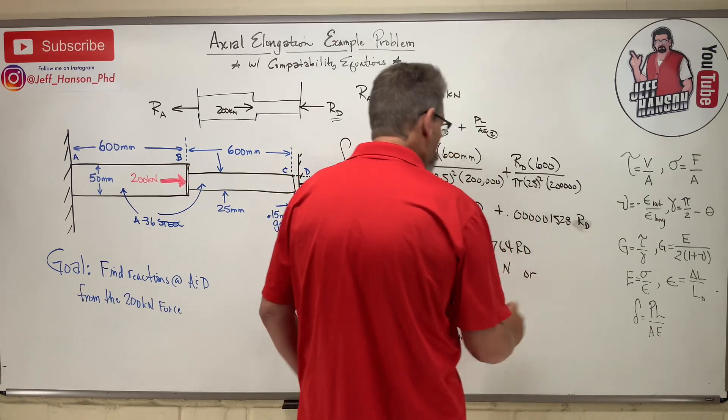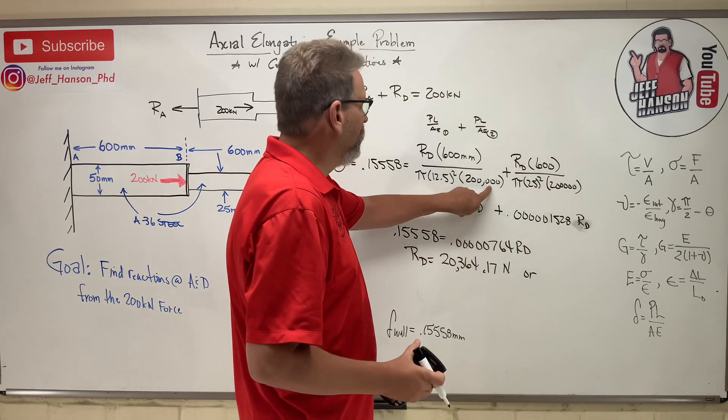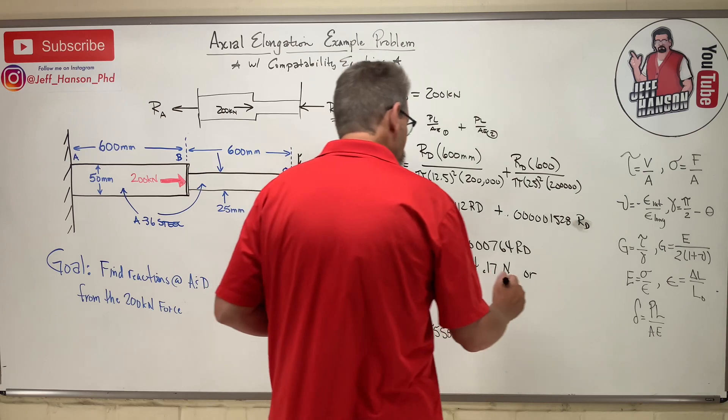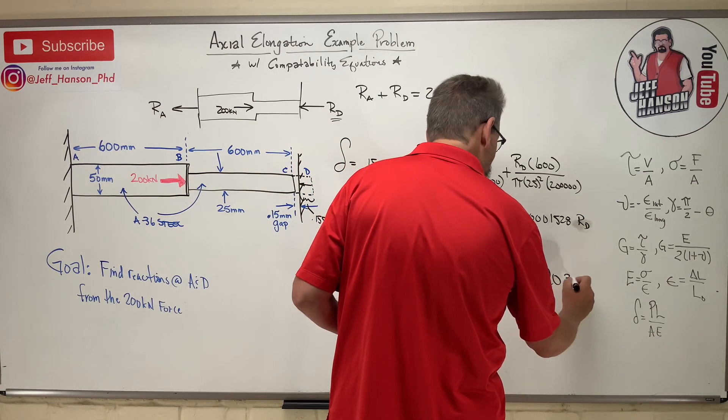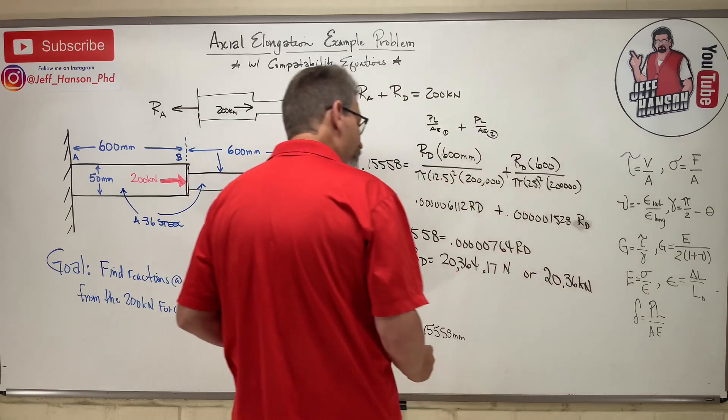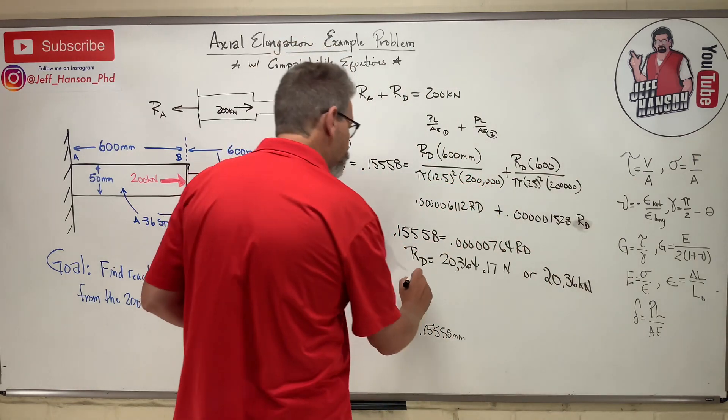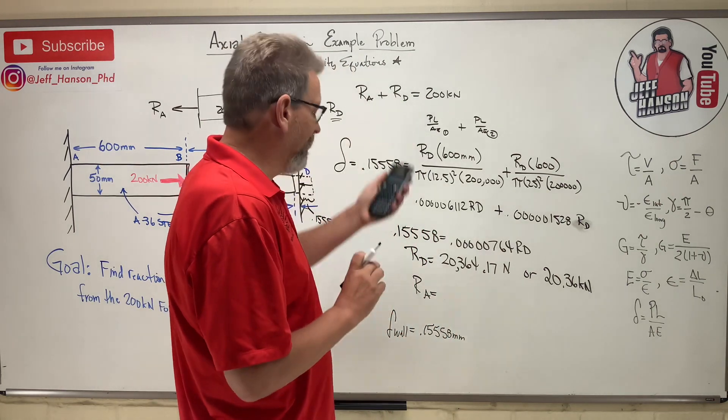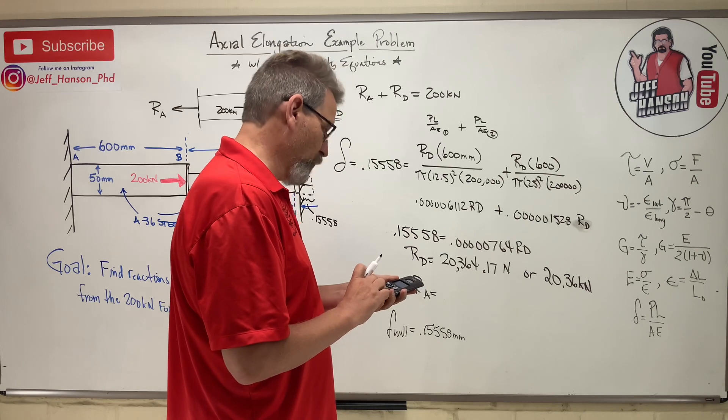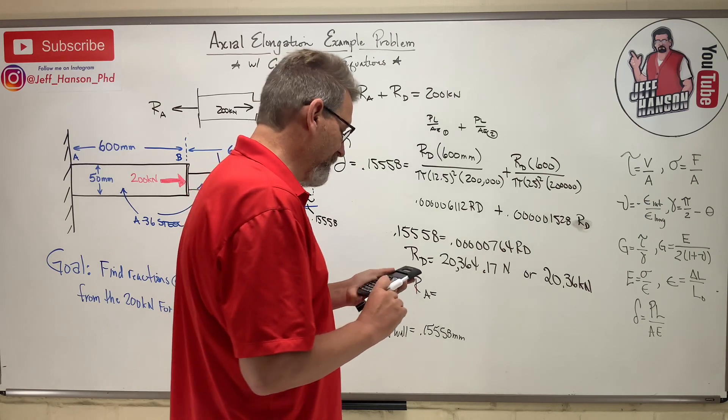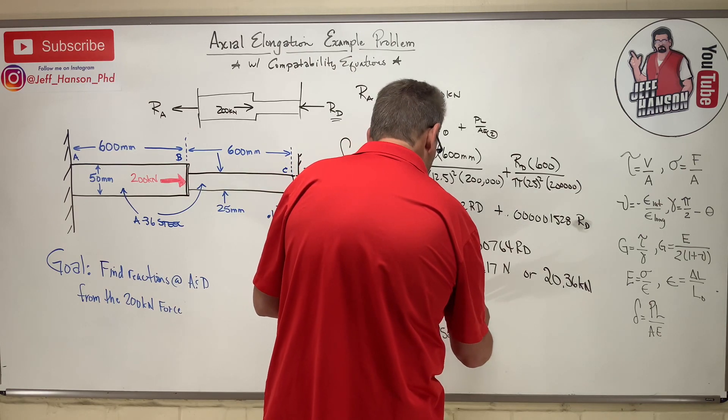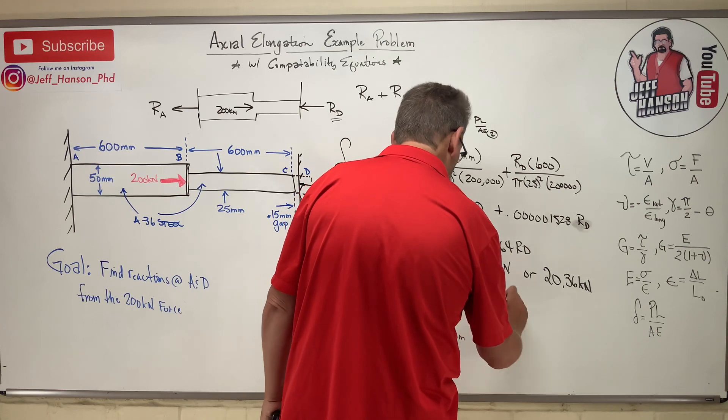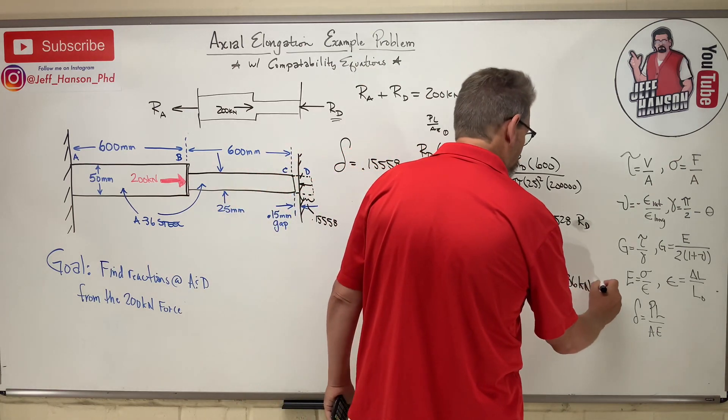Why is it newtons, right? Because this was in megapascals, which is newtons over millimeter squared, so that'll make Rd newtons. Or 20.36 kilonewtons. So if Rd is 20.36 kilonewtons, then Ra must be equal to, this equation here, right? 200 minus 20.36, which makes Ra equal to 179.64 kilonewtons. There's Ra and there is Rd.